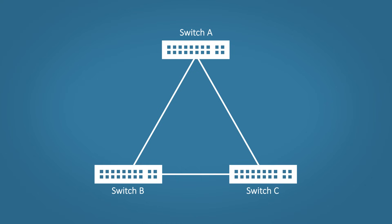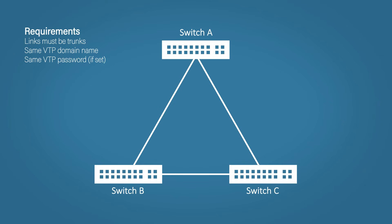There are some requirements that must be met before VTP will work. All links must be trunks — no VTP messages will be sent across any access ports. All switches must have the same VTP domain name; the domain name is set so switches know which messages to listen to and which to ignore. You couldn't plug in a switch with a different domain name and start creating VLANs to sync. The VTP password is completely optional, but if you do set it then it must match across all switches.